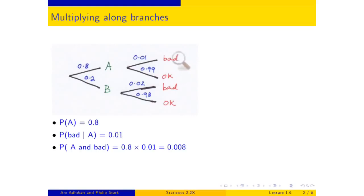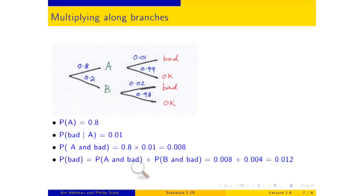If you ask what is the chance that your widget is on a particular branch, you multiply the probabilities along the branches. Now, what is the chance that a randomly pulled widget is bad at all? It's either bad and came from machine A, or bad and came from machine B. So: 0.8 times 0.01 plus 0.2 times 0.02 gives the total chance that the object is bad. We're just working with proportions, breaking up the total proportion bad by which machine it came from.